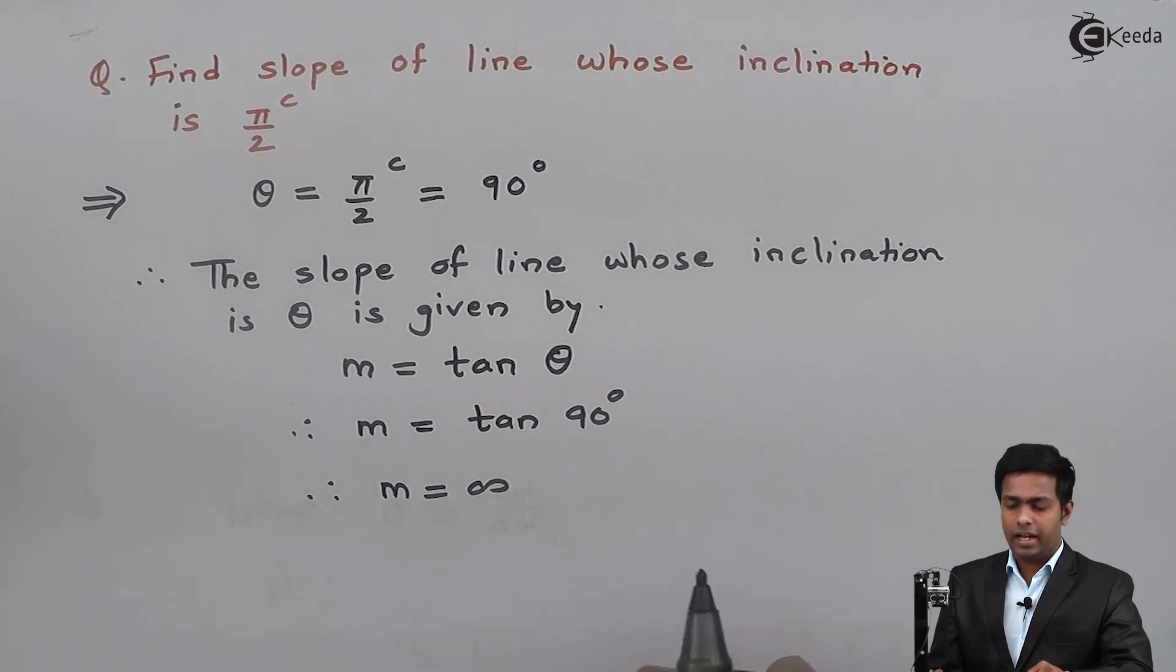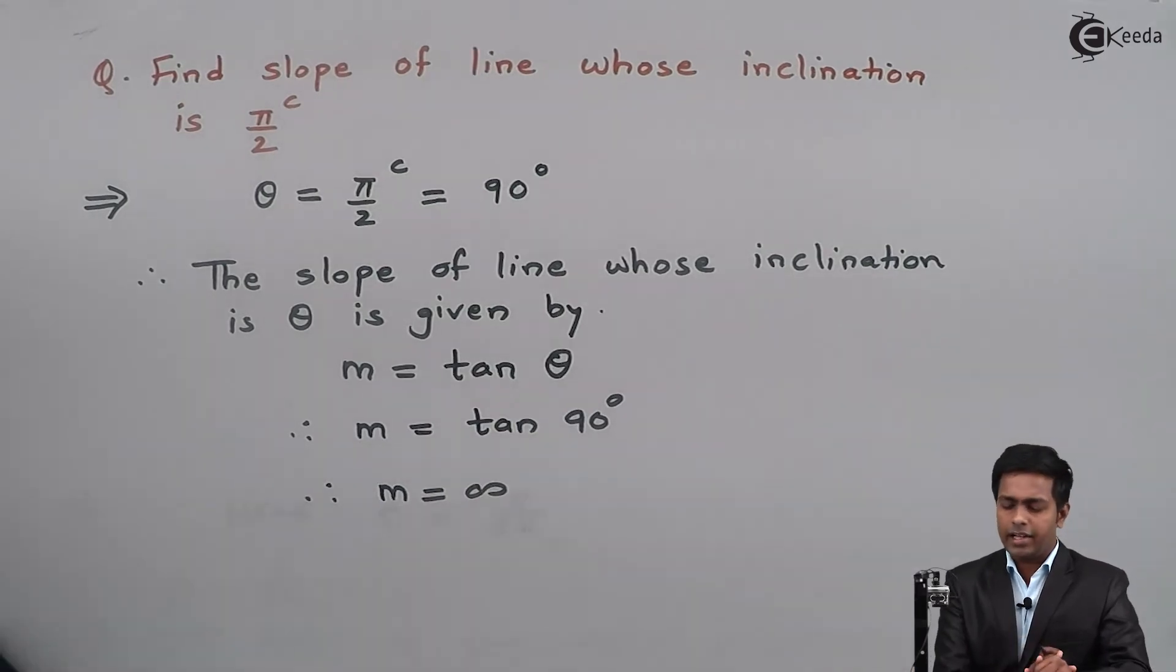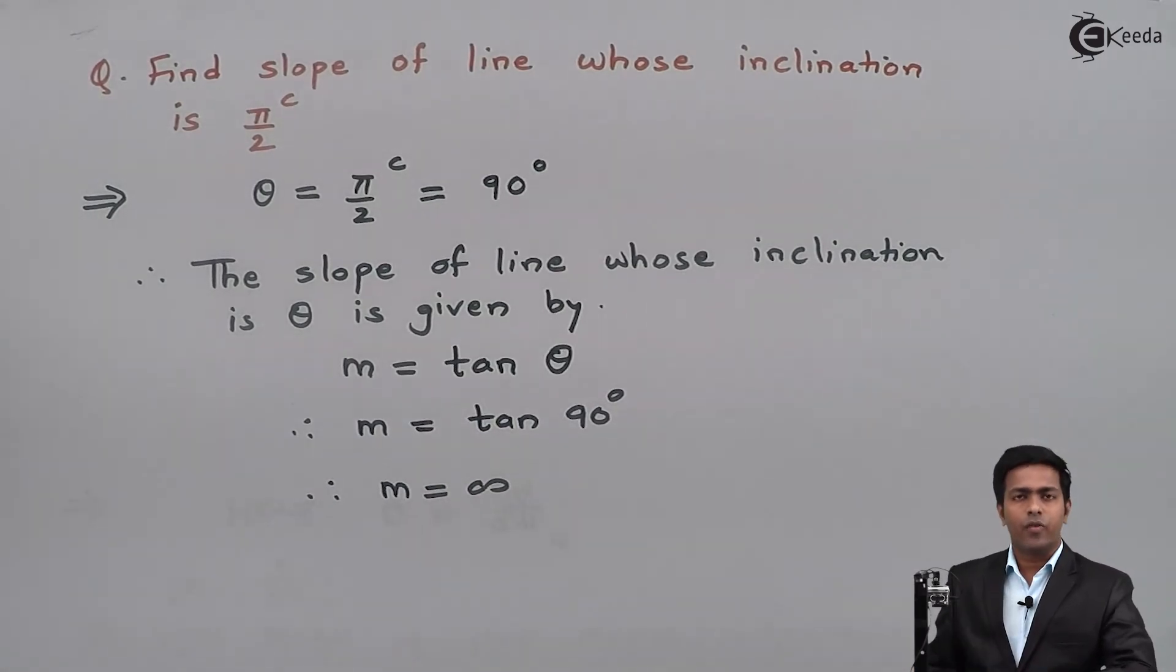This means whenever any line makes an angle of 90 degrees with the positive direction of the x-axis, the slope is not defined, or we can say the slope is infinity.